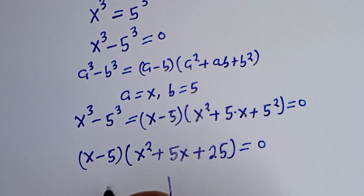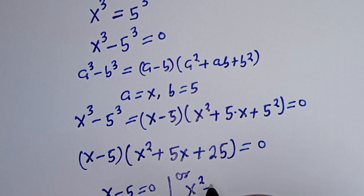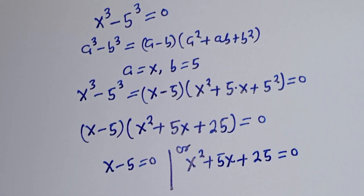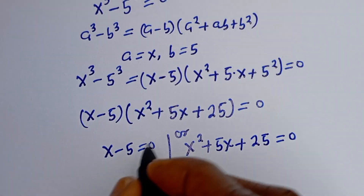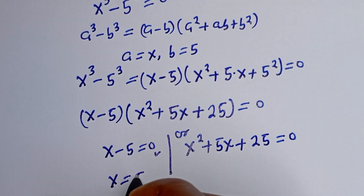So there are two cases here. The first case is S minus 5 equal to 0, or S squared plus 5S plus 25 is equal to 0. From the first case, S is equal to 5.